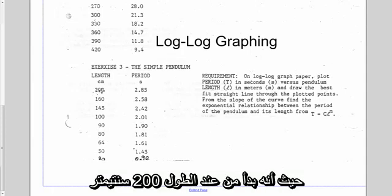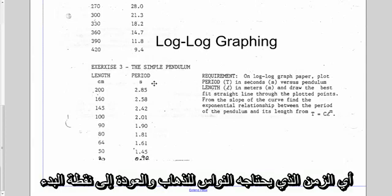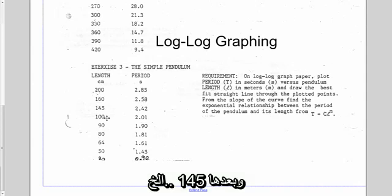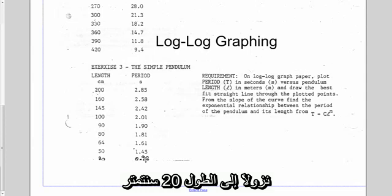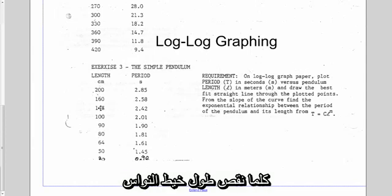Some data I've got here, somebody has got a pendulum and they've started at 200 centimeters and measured the period of that pendulum, the time it took for the pendulum to go over and back as 2.85. Then they shortened to 160, 145, and worked their whole way down.